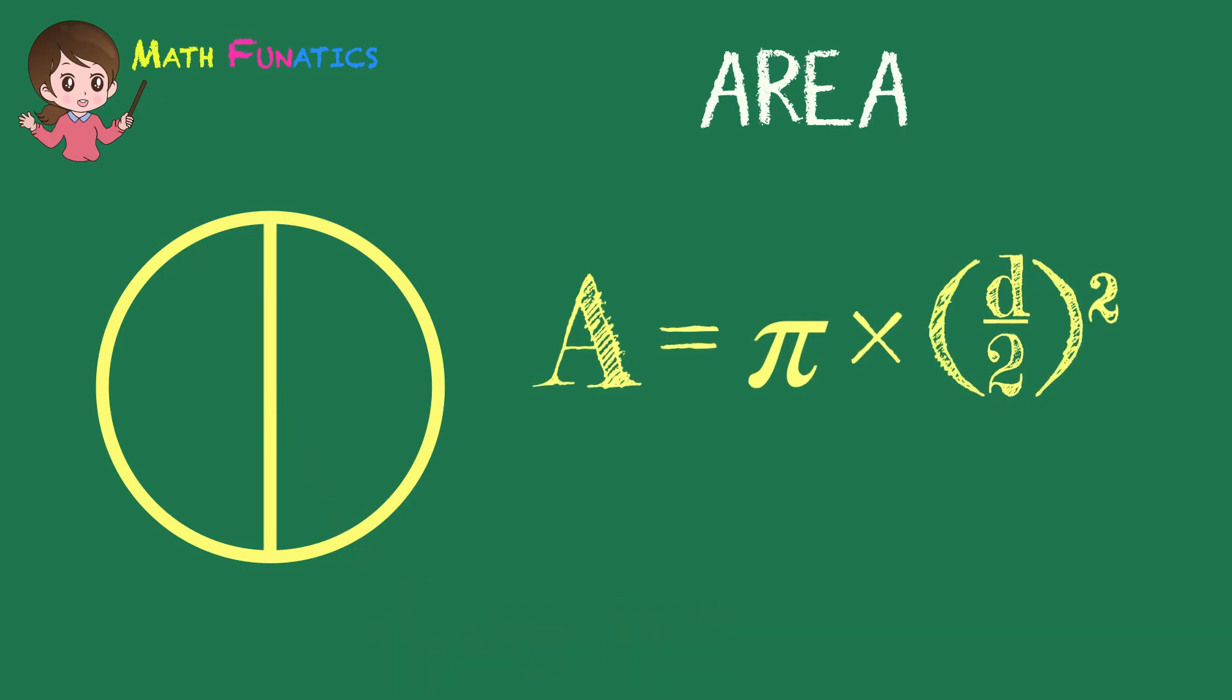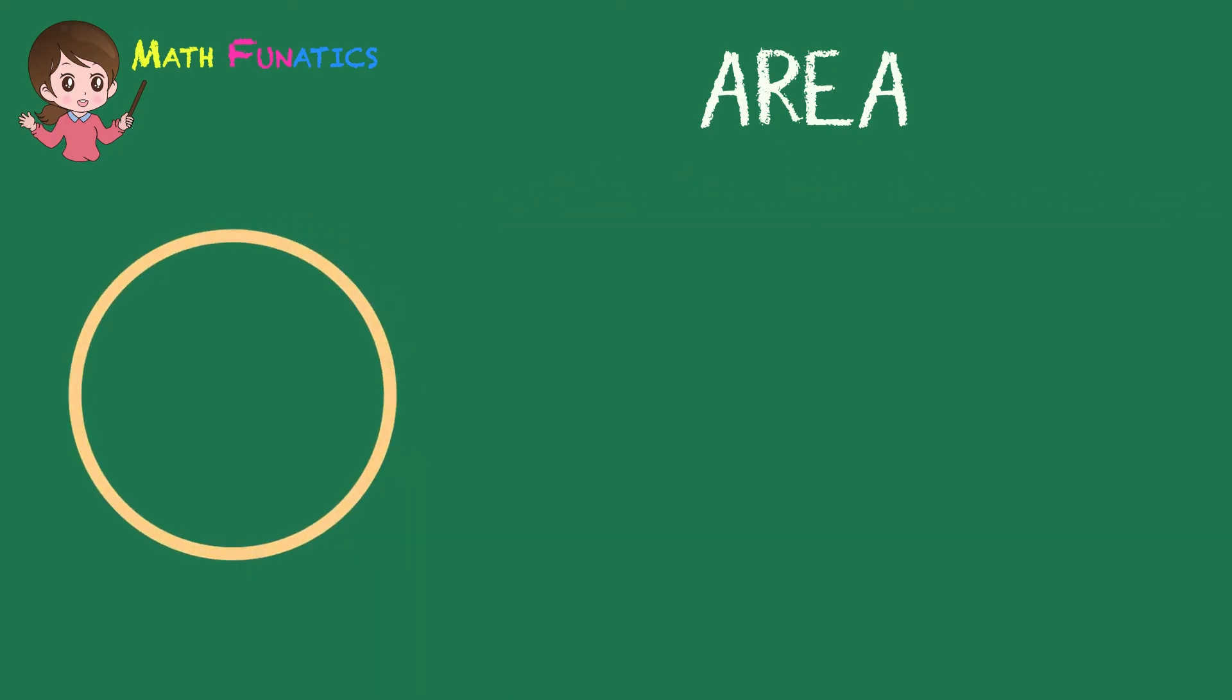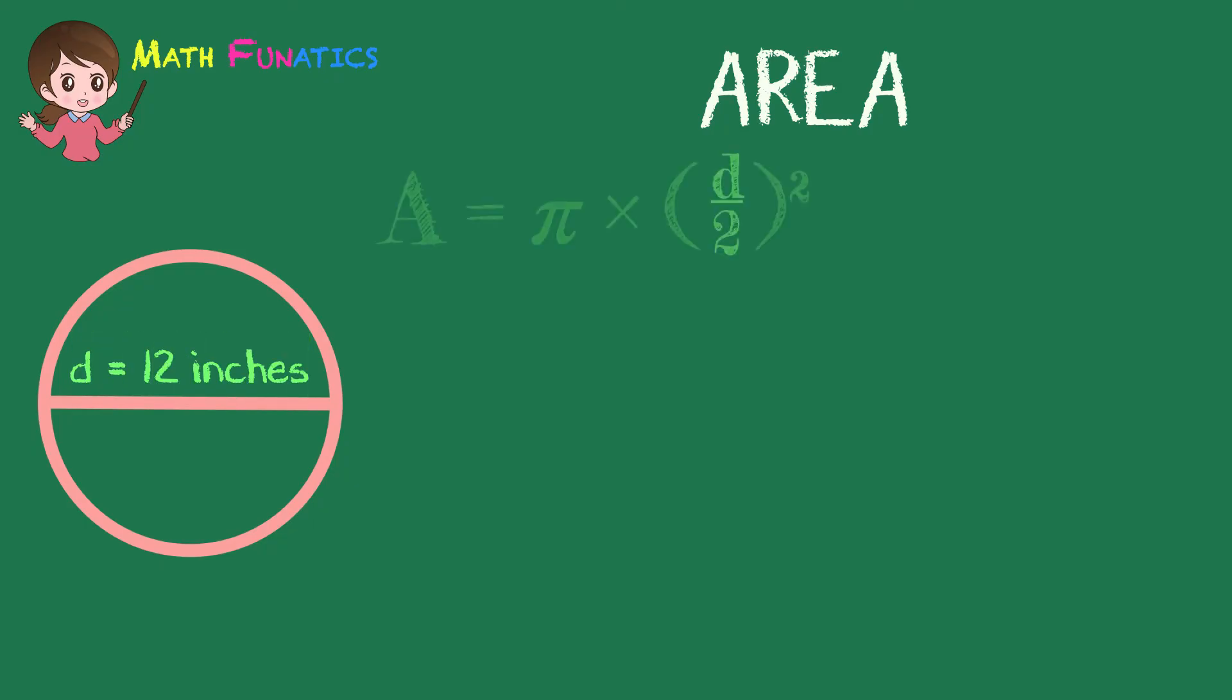Then we rewrite the formula that we are going to use as A is equal to pi times the square of half of the diameter. Let us apply it with an example. What is the area of a circle if its diameter is equal to 12 inches? We solve by substituting the pi with its value, which is 3.14, and replace d by 12.